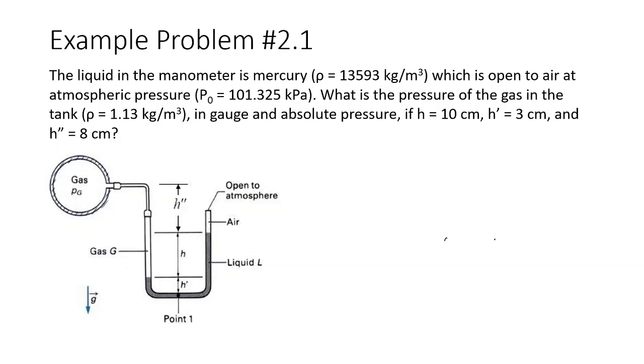So let's read through this example together. The liquid in the manometer is mercury with a density of 13,593 kilograms per meter cubed, which is open to air at atmospheric pressure. If we recall, atmospheric pressure is about 101.3 kilopascals.